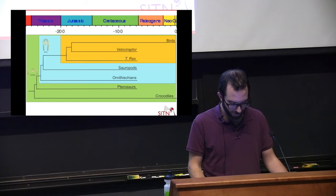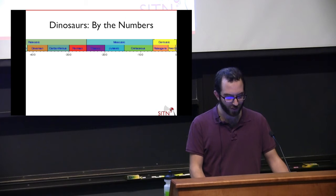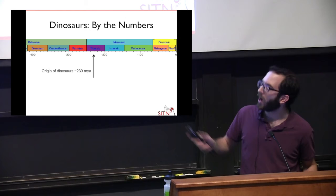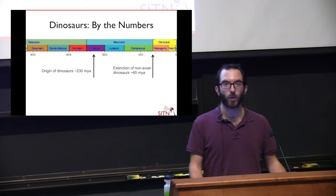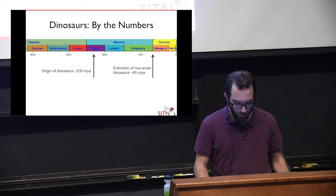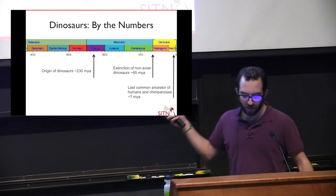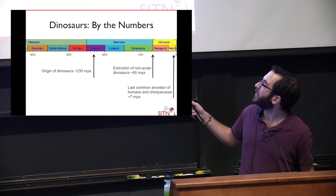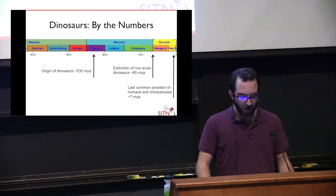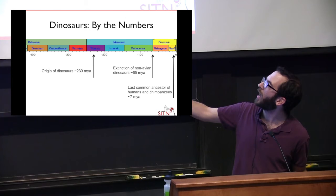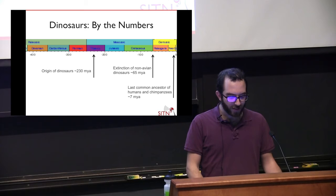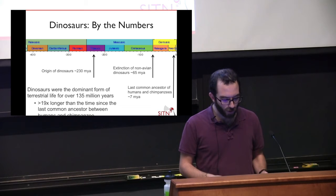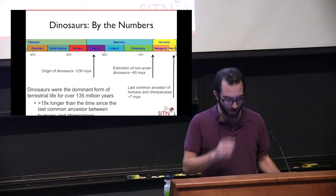Bringing this back to the cladogram: ancestors of dinosaurs had this sprawling posture, including modern-day crocodiles. But when dinosaurs evolved, all dinosaurs had this erect posture. Dinosaurs originated around 230 million years ago in the early Triassic period, and the non-avian dinosaurs went extinct about 65 million years ago — birds are still around. Our most recent hominid ancestors split from chimpanzees only about 7 million years ago, for perspective. So dinosaurs were the dominant life form on Earth for 135 million years — that's 19 times longer than the time since we split from chimpanzees, and in fact twice as long as they've even been extinct.